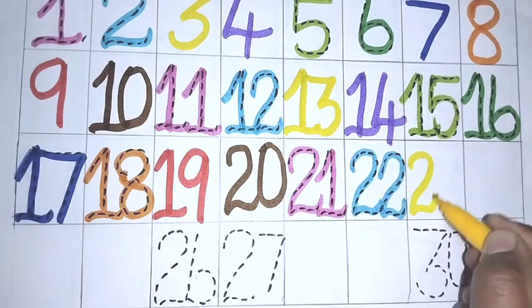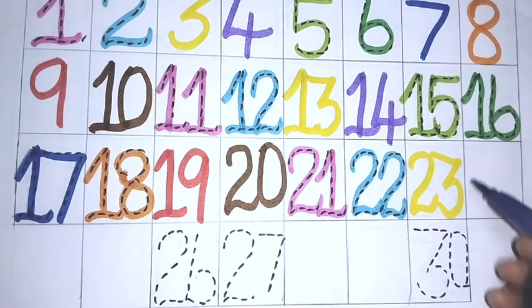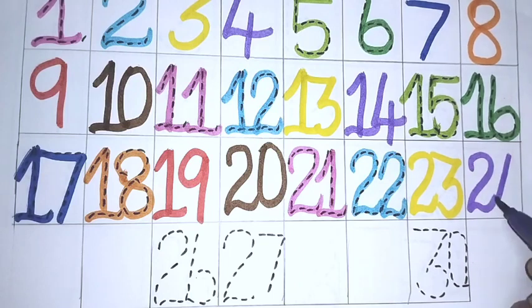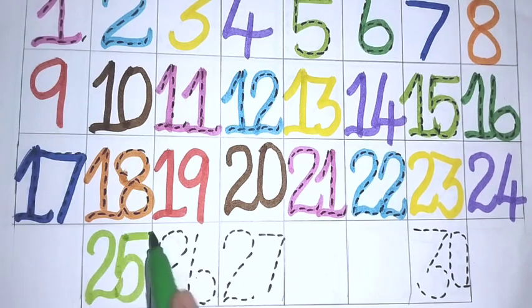Two, three, twenty-three. Two, four, twenty-four. Two, five, twenty-five.